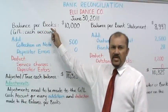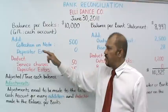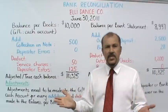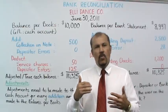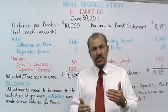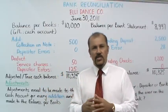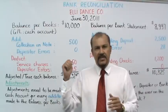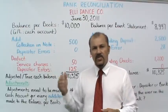The balance per books for June 30th is $10,000. To that, we're going to add certain items and then deduct certain items. From an addition standpoint, I have collection on note: $500. This could be an example where Ellie Dan's company is a small company, and what Ellie might have done is have an arrangement with her bank — where instead of customers sending checks to her directly, she may have the customers send checks directly to the bank, where the bank serves as a collection agent. In this example, a customer would have sent a check to Ellie's bank directly during the month of June, let's say June 15th.